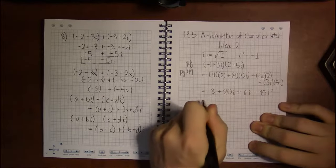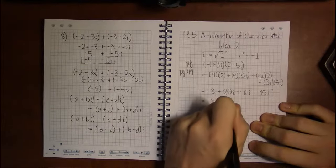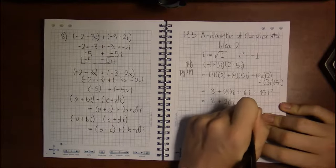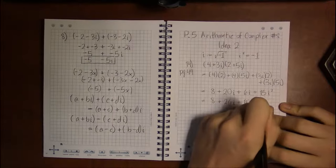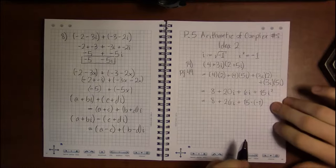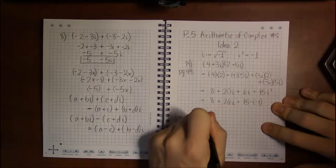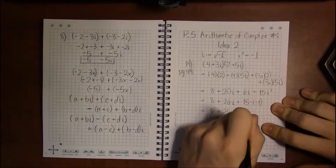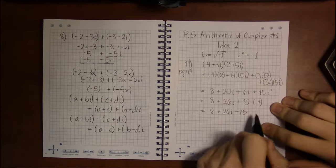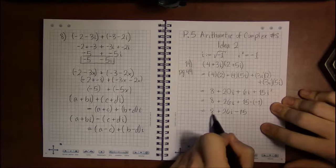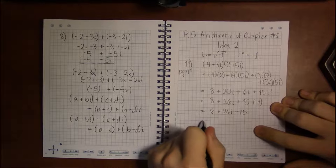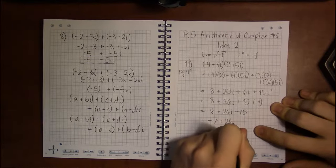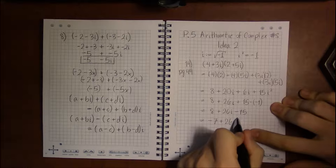So this ends up being 8. I can go ahead and combine these two to be 26i. But 15i squared is just the same thing as 15 times minus 1. Because i squared is minus 1. So this is 8 plus 26i minus 15. Because 15 times negative 1 is minus 15. And the only two like terms we have are 8 and minus 15. 8 minus 15 is minus 7. And that is our result.